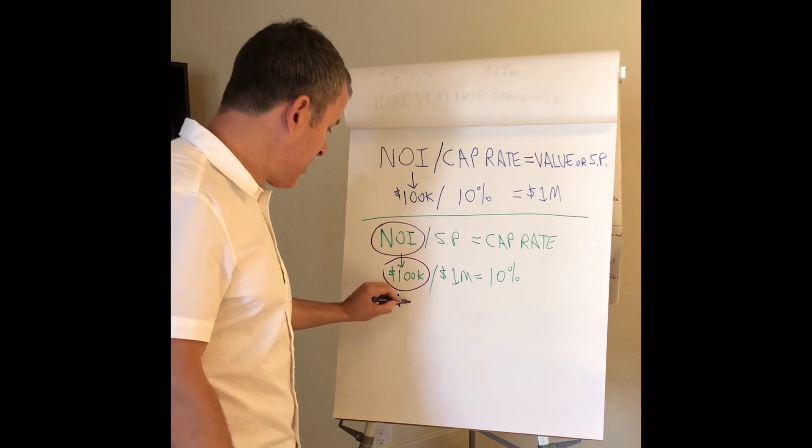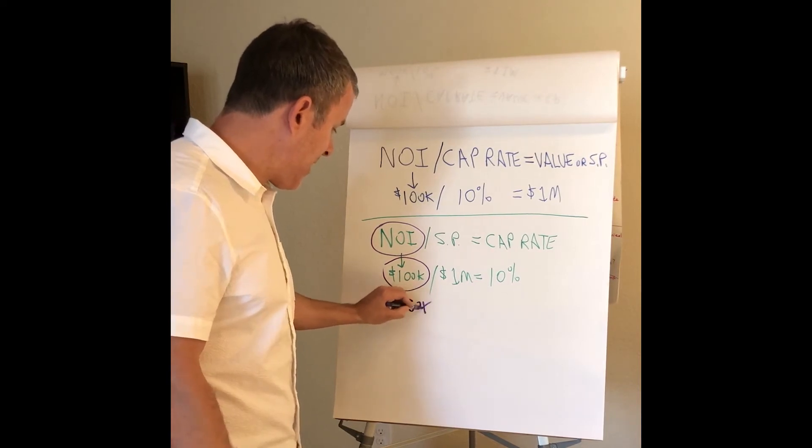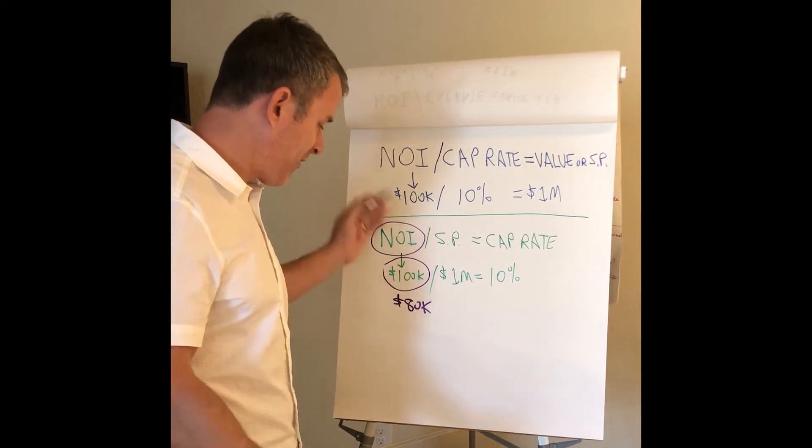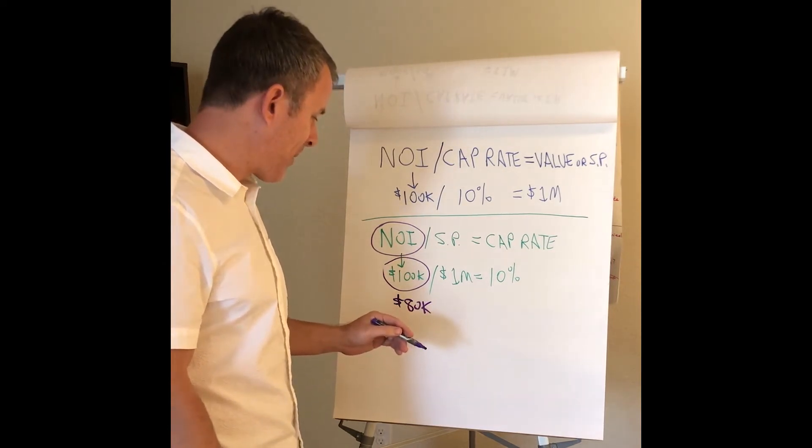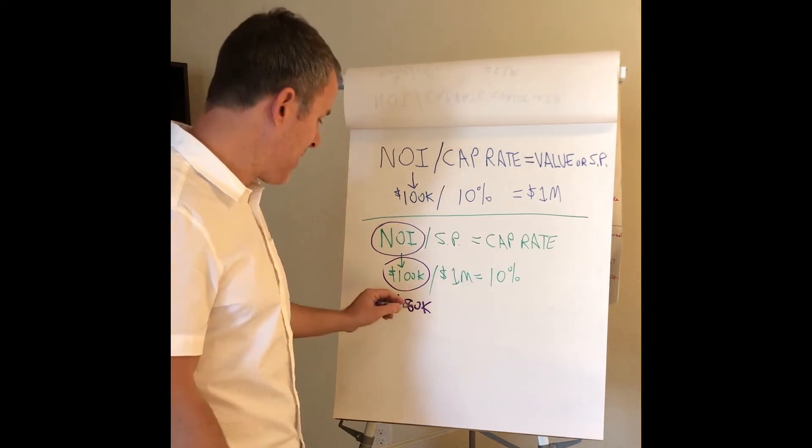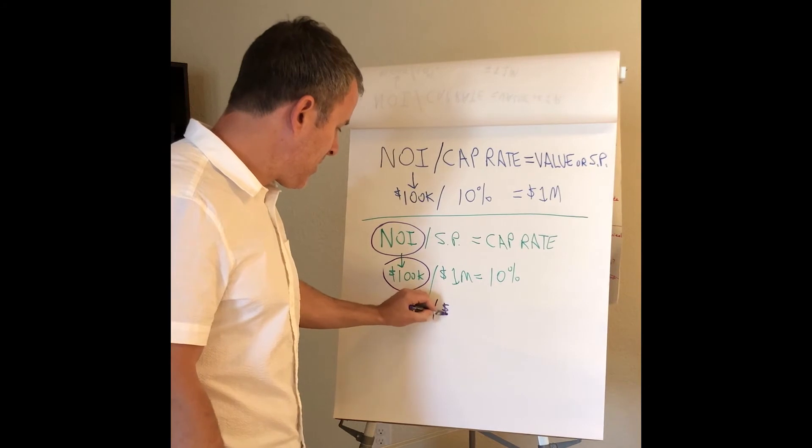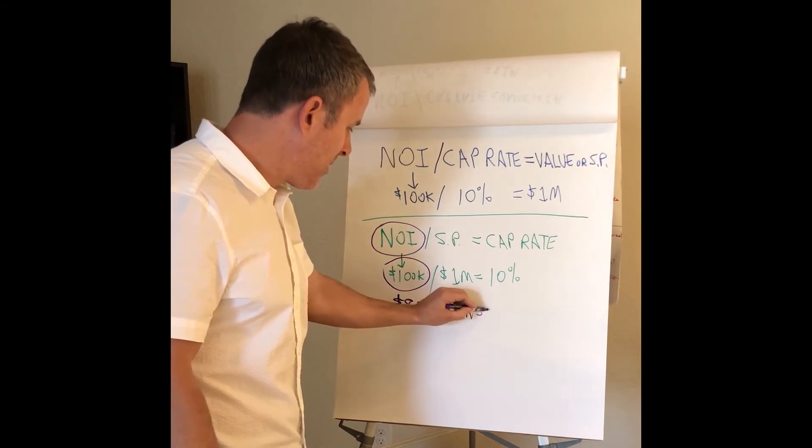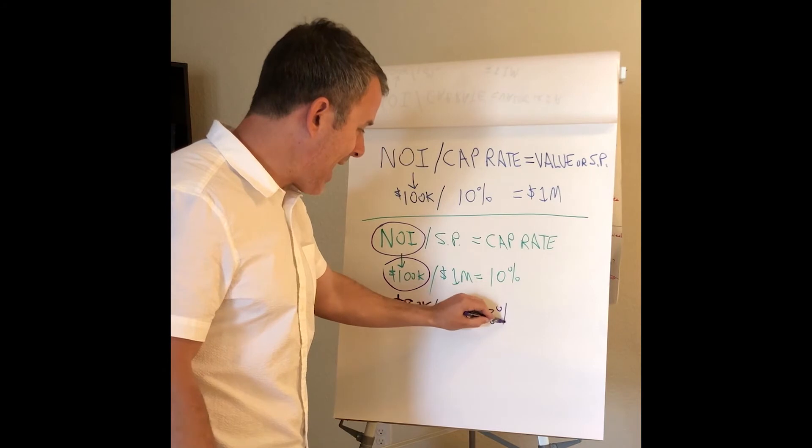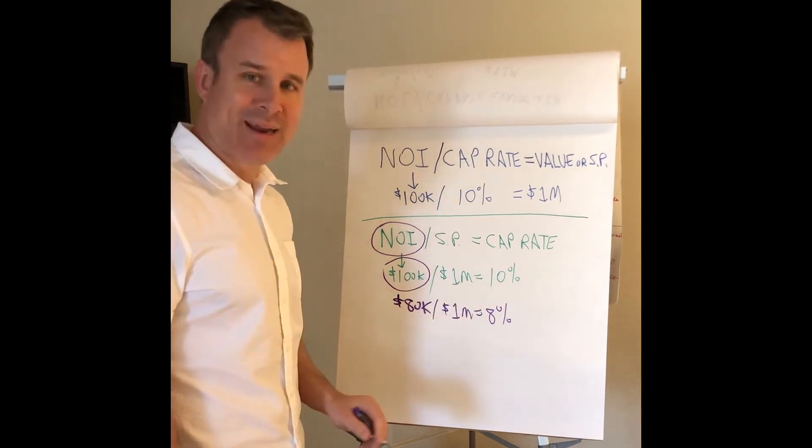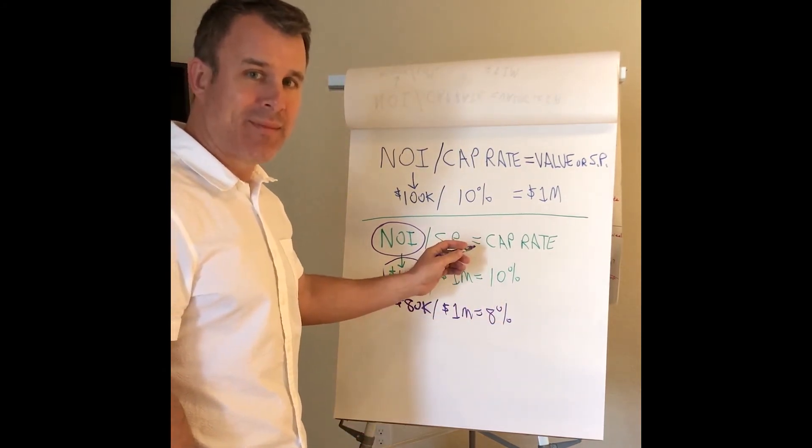Let's say I have to adjust that down to $80,000. I take the current $100,000, I take off the subtractions for property taxes, whatever other issues might be there. $80,000 divided by $1 million equals an 8 cap. I'm buying it actually at an 8 cap, not a 10 cap.